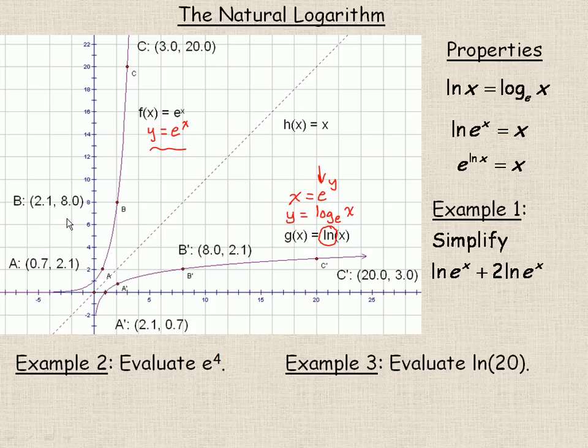B is the point (2.1, 8), because e to the power of 2.1 is approximately 8. All these are just rounded, they're not exact. And so, if the point (2.1, 8) is on the original e to the x function, on the inverse would be the point (8, 2.1). I showed in the calculator that e cubed was just over 20. So, that's the point (3, 20). So, on the inverse over here would be the point (20, 3).